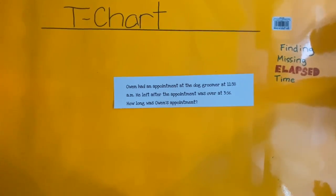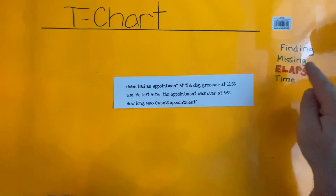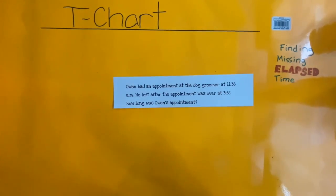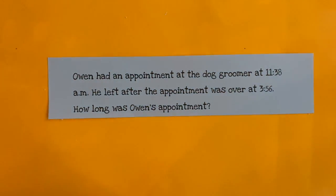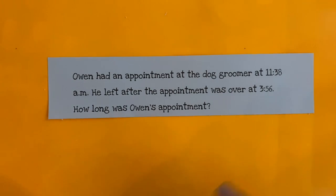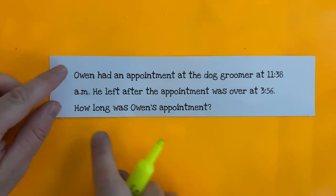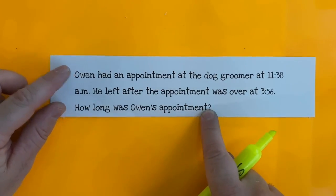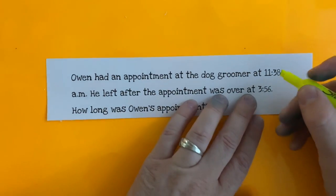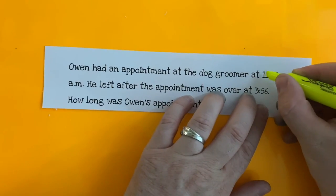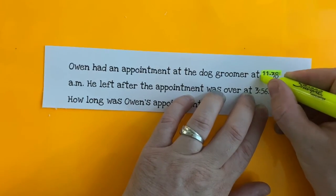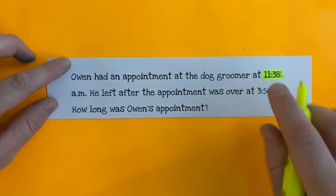Let's take a look at how we can use the t-chart method to help us find missing elapsed time. Our word problem says: Owen had an appointment at the dog groomer at 11:38 AM. He left after the appointment was over at 3:56. How long was Owen's appointment? Our first important piece of information is 11:38 AM.